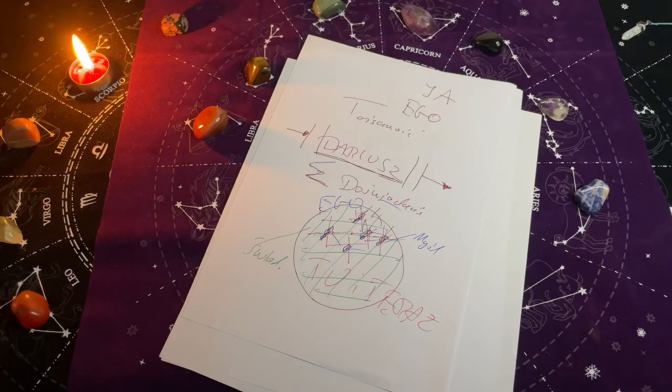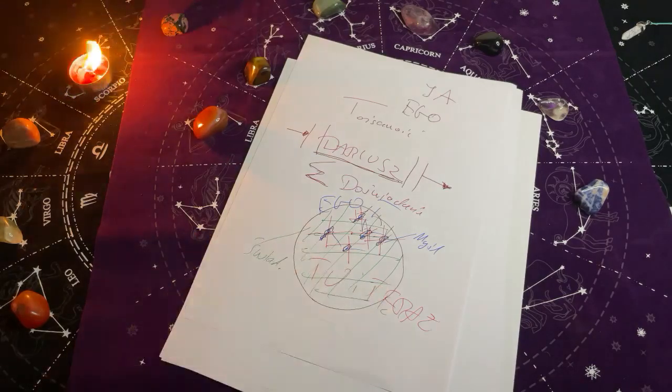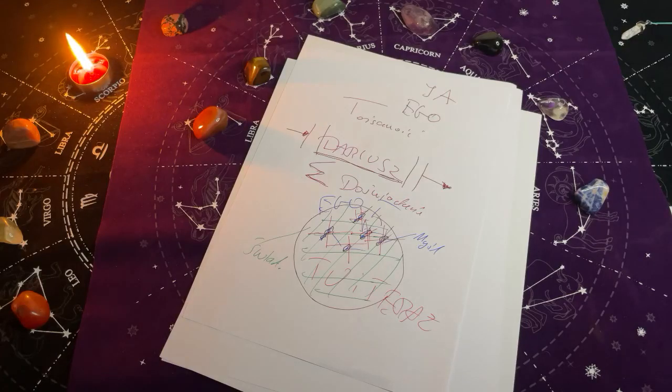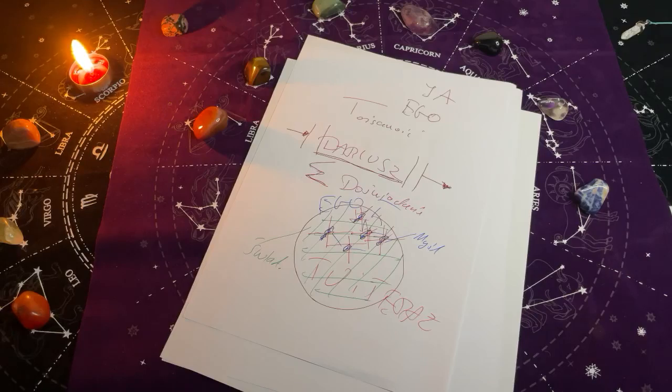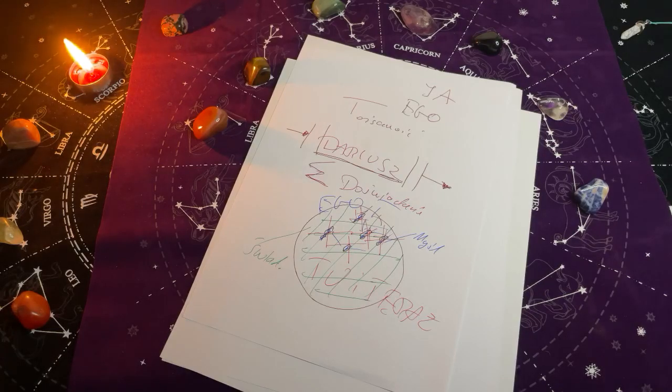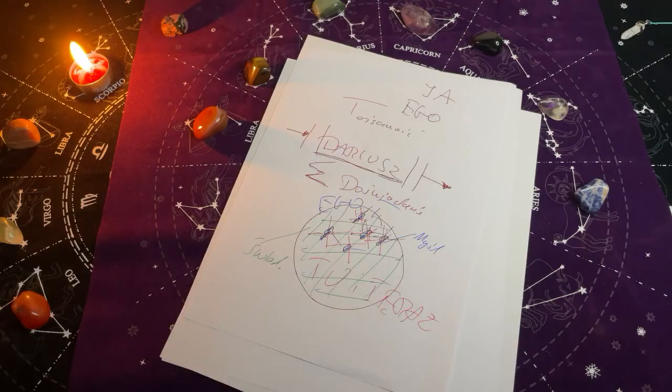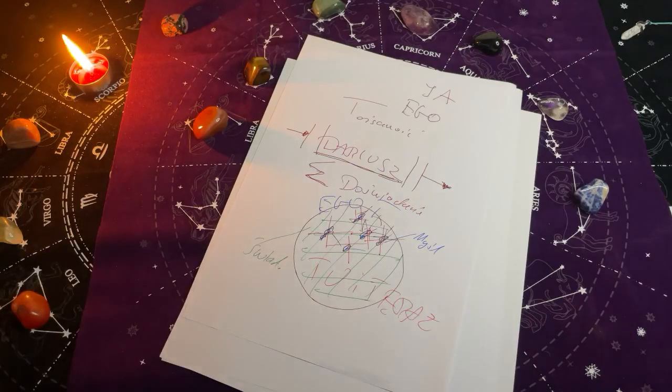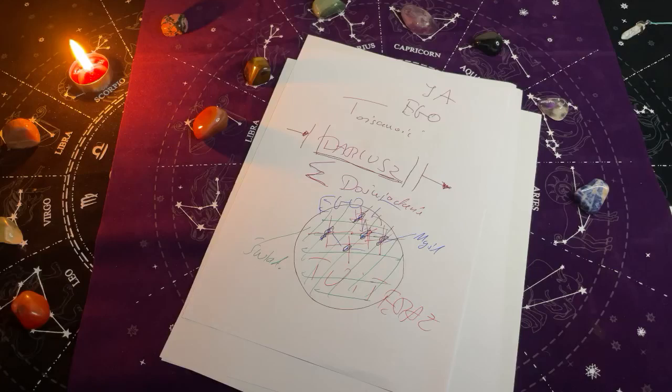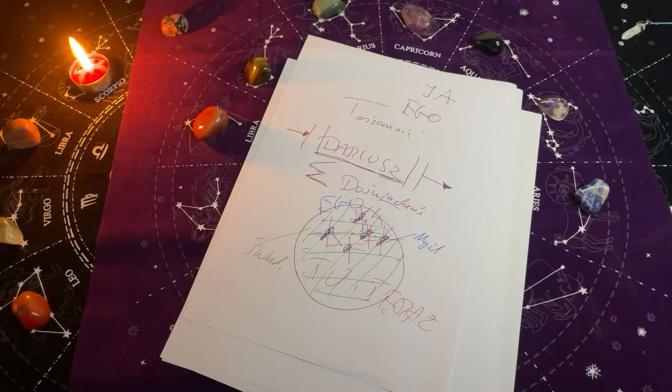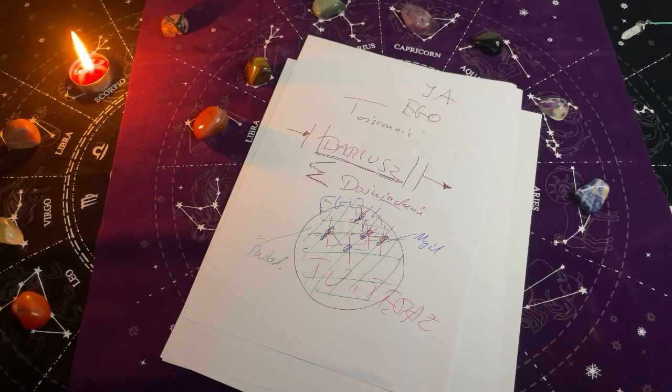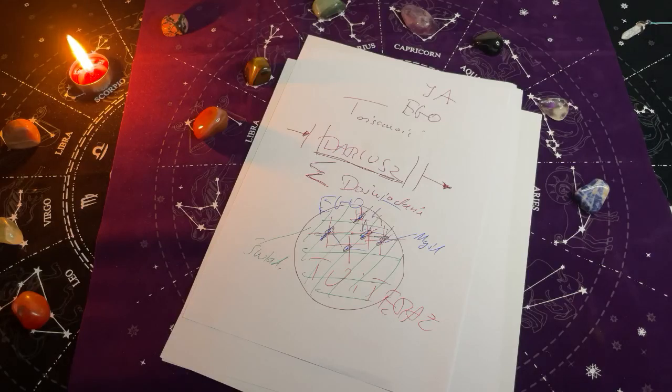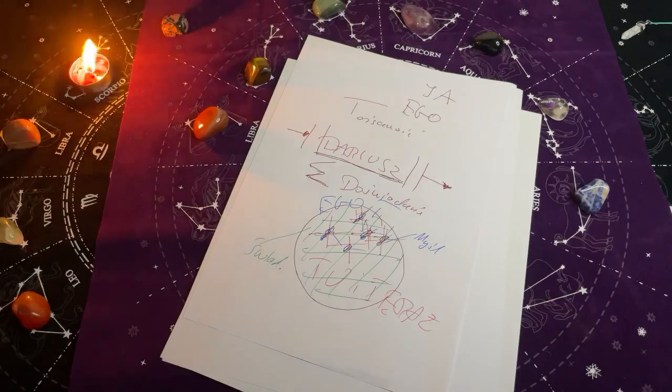Nie myślcie o tym za dużo. Po prostu z dnia na dzień starajcie się coraz głębiej wchodzić w medytację. Wszystko będzie samo wtedy się objawiać. Myślenie to jest umysł, to jest ego, a my robimy wszystko, by właśnie nie myśleć, tylko doświadczać. Tam, gdzie jest ego i są myśli ego, tam nie ma duszy. Jak to się rozpuszcza, jest przestrzeń dla duszy, dla jej głosu. To róbcie.